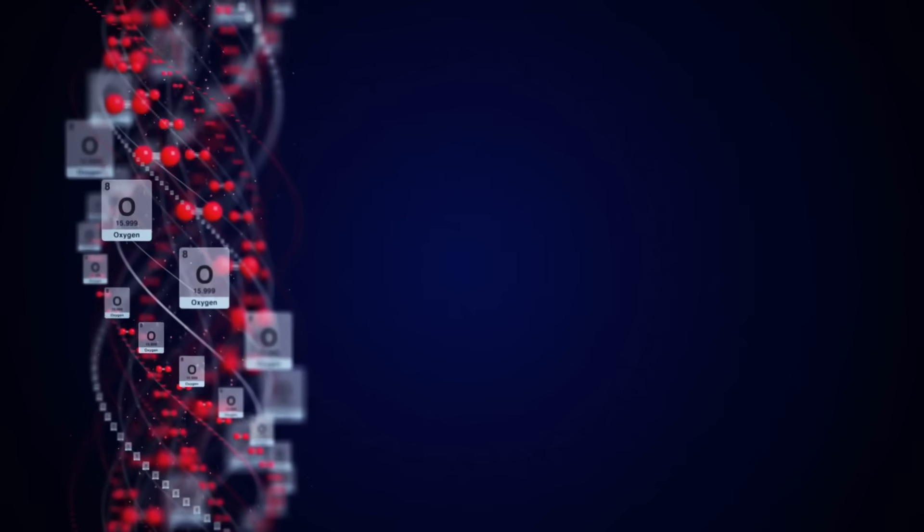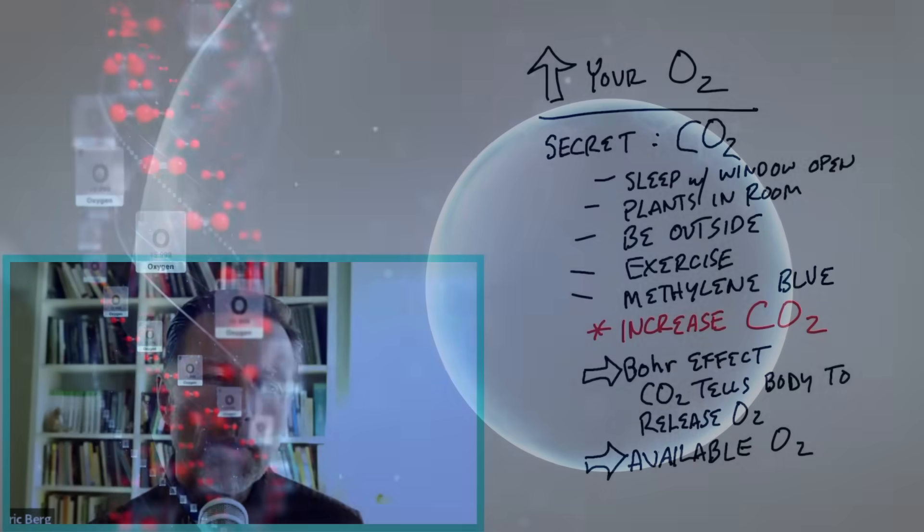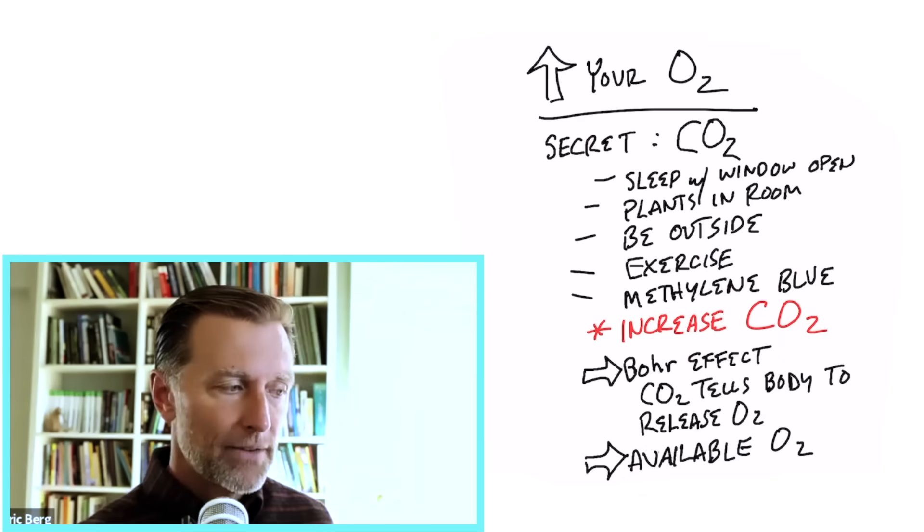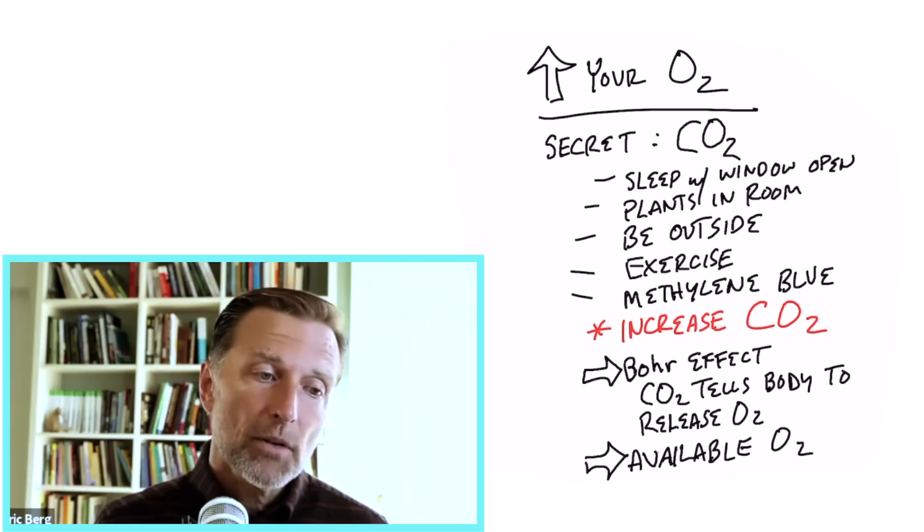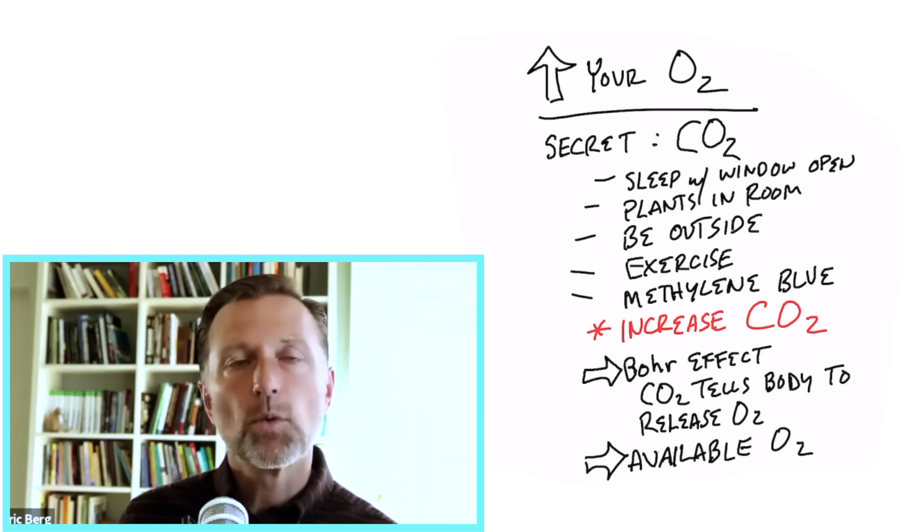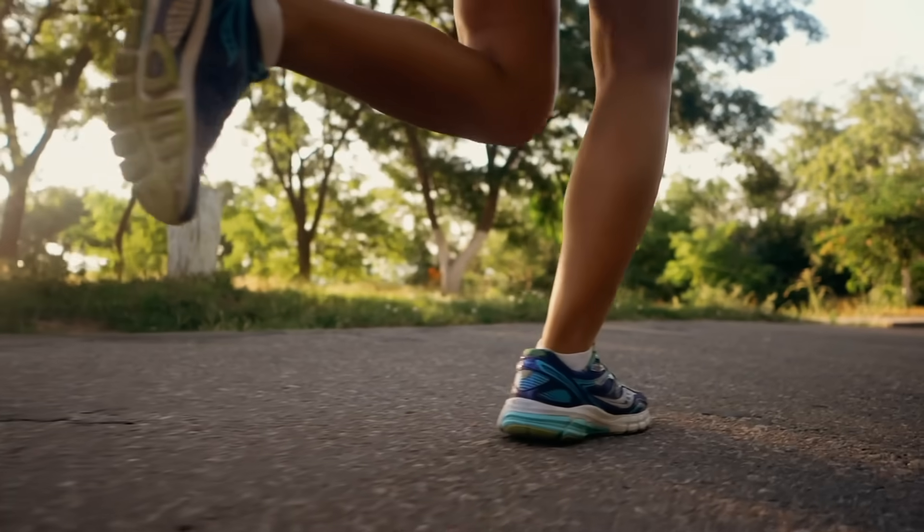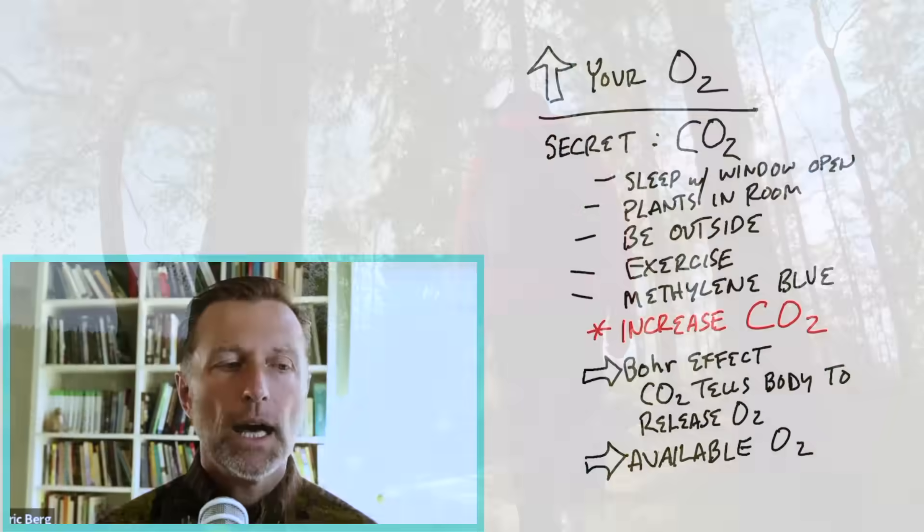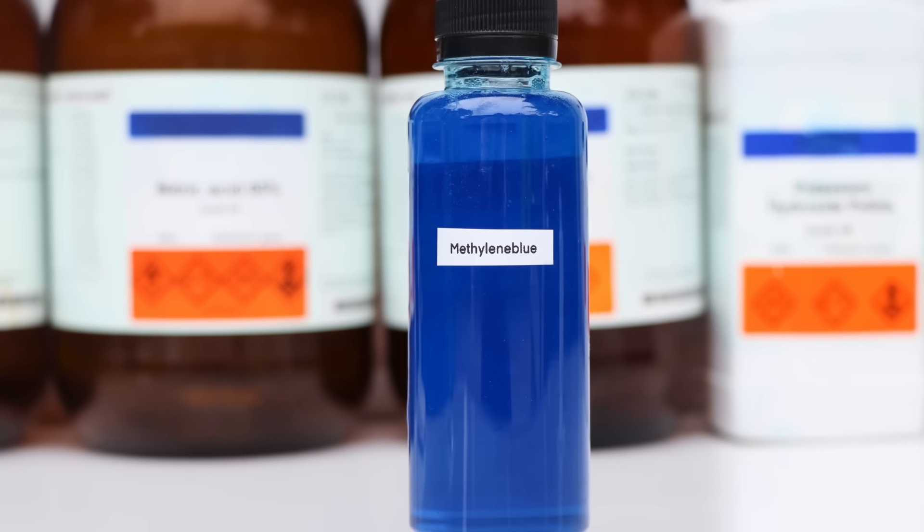So today I'm going to reveal a secret of how to increase available oxygen into your cells. You probably already know that sleeping with the window open is going to help increase oxygen. Maybe having more plants in your room are going to give you more oxygen. You also probably know that exercise will increase oxygen, specifically aerobic type exercise. Being outside in nature will also give you more oxygen. I recently did a video and talked about methylene blue can give you more oxygen to the cells, which is pretty interesting.